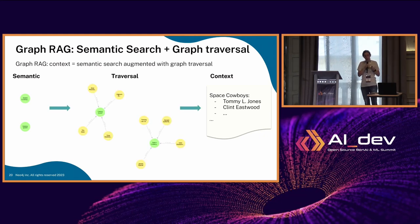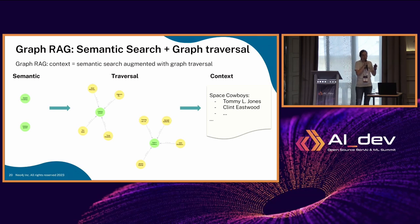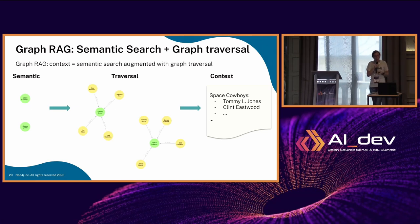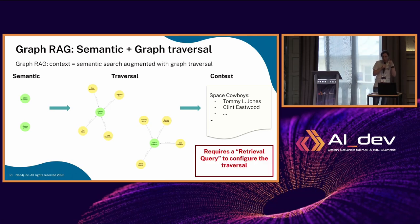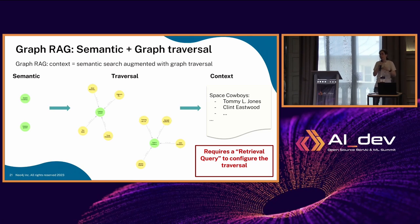With graph RAG, you can still start from the same semantic search — finding, say, Space Cowboy in Galaxy Quest — but then you traverse your graph and find the actors connected to those movies. You pass everything — both movies and the list of actors — into the context, and then the LLM has more information to answer the question. The drawback is that you have to write this traversal query yourself; for instance, I've decided to traverse only the 'acted in' relationship, so if someone asks for the director, we won't find that information.